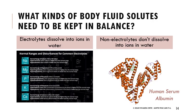When thinking about the solutes that need to be kept in balance, we distinguish between electrolytes and non-electrolytes. Electrolytes dissolve in water into ions — common ones include sodium, magnesium, phosphate, potassium, calcium, and chloride. Non-electrolytes don't dissolve into ions. These include common blood proteins like albumin, globulins, or hemoglobin. Albumin is also commonly used in clinical settings for molecular tests and diagnostics. When something in our body fluid doesn't dissolve into ions, it's a non-electrolyte.